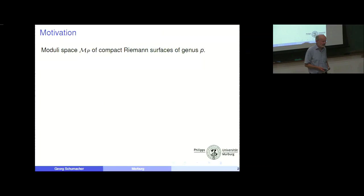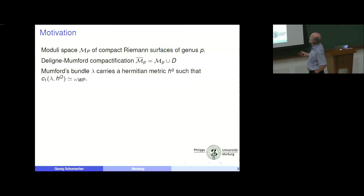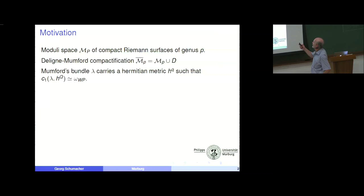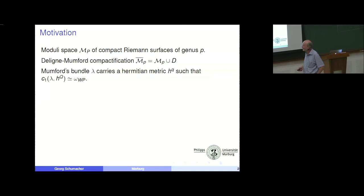Of compact Riemann surfaces. There is the linear Mumford compactification denoted by M-P bar, and we have a divisor at infinity, or the compactifying divisor. Mumford's bundle carries a canonical metric — call it H_Q, where Q ought to be a capital Q — whose curvature form is actually the Weil-Petersson form, which was constructed in a totally different way.